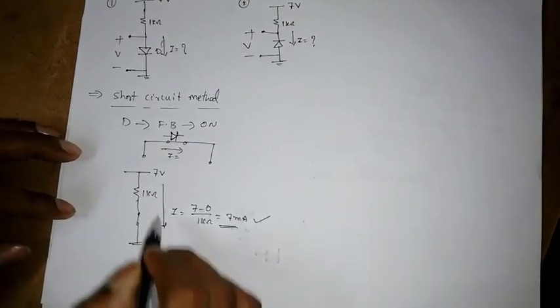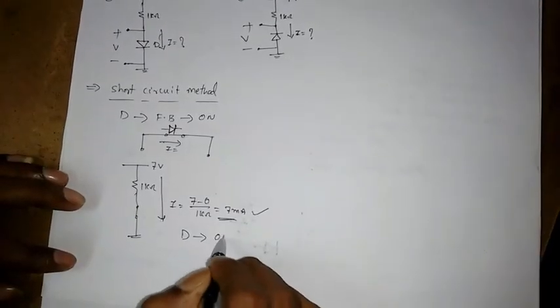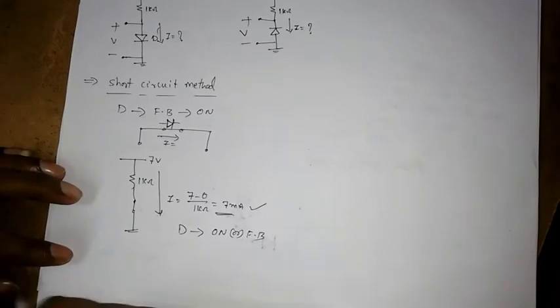So we assume that the current is in the top to down flowing. So whatever we got, it's positive. So whatever we assume that is right. That means diode is in on or forward bias.